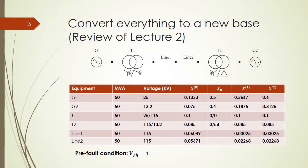Next we convert everything to a new base — this is just a review of lecture 2. Here we choose a new base of 50 MVA. The voltage is referred to zone 1 with 25 kV, and the other zones will have voltages following the turn ratio of the transformers.